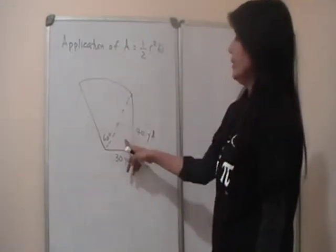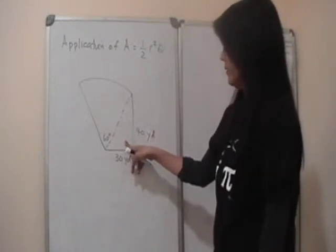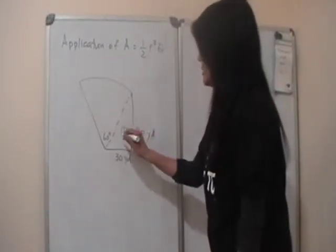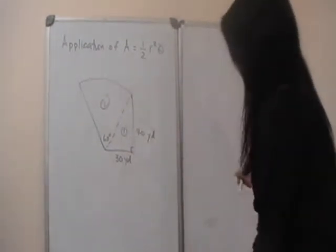So in order to find the area of this lot, we just have to look at the two things. Let's call this part one, or lot one, lot two.